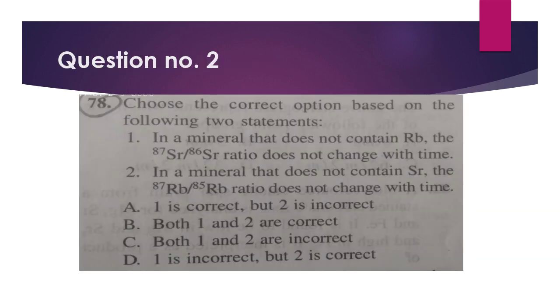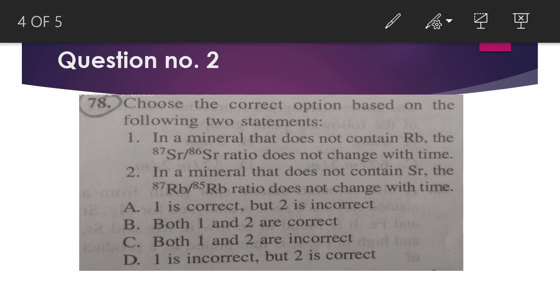Choose the correct option based on the following statements. There are two statements given. First is: in a mineral that does not contain rubidium, the 87Sr/86Sr ratio does not change with time. Yes, it is true. If there is no rubidium, then obviously no further strontium will be produced, so the ratio will remain same. So first statement is correct.